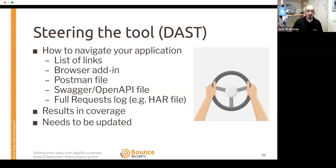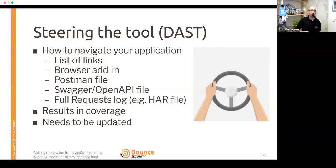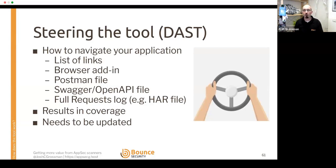Keep an eye on what coverage you're getting. Can you get a log out of the scanner showing which sections and endpoints were covered? Also, this isn't a one-time thing — most applications are continuously developed, with new features and functionality added. If you don't have a way of telling the DAST scanner about new functionality, it's basically stuck in the past, scanning how the application was when you first ran the scan. It's important to maintain coverage in order to get the findings you need.